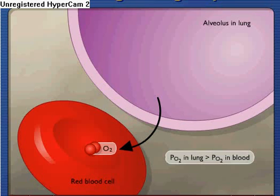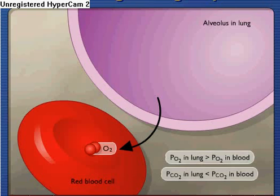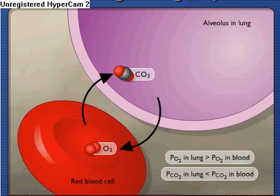Also, the partial pressure of carbon dioxide, PCO2, in the air in the lungs is less than the PCO2 in the blood, so carbon dioxide diffuses out from red blood cells and into the air in the lungs.